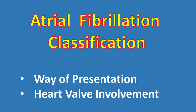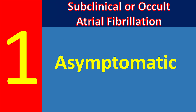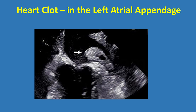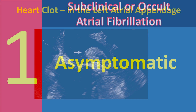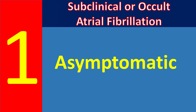Atrial fibrillation can also be classified by the way it presents or whether a specific heart valve condition is present. Subclinical or occult atrial fibrillation is largely asymptomatic and only becomes apparent in the setting of a heart clot embolic event, acute heart failure exacerbation, other medical illness, or upon a routine electrocardiogram (ECG) done for other purposes.